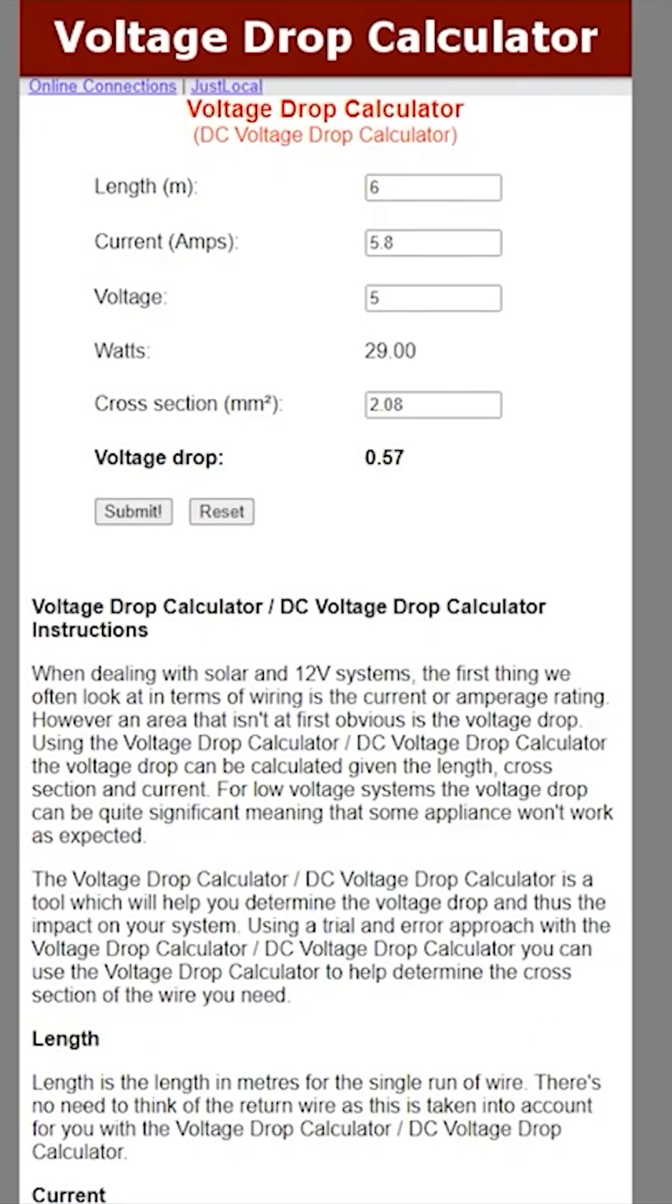For example, if our cable was only 3m long, the voltage drop across the cable would be only 0.28V.